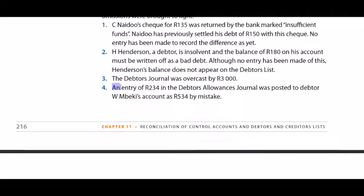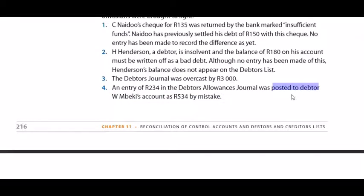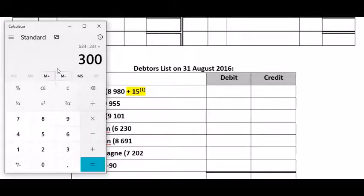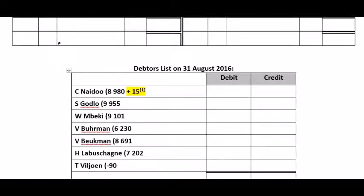Adjustment 4: An entry of 234 Rand in the DAJ was posted to debtor Mbeki's account as 534 Rand by mistake. The key here is that the mistake was in posting to the debtor's account. This indicates the DAJ value was fine, so the value in the control account will be fine — the mistake was only in W Mbeki's account and will only affect the list. We subtracted 534 Rand where we should have subtracted only 234 Rand, so that 300 Rand difference must be added back to his account.